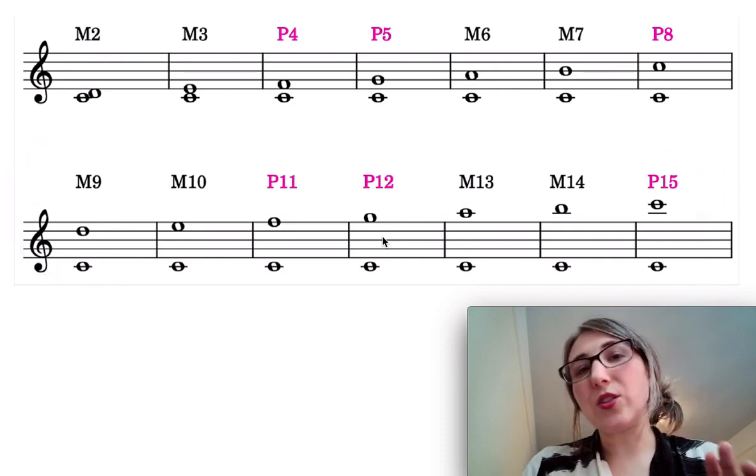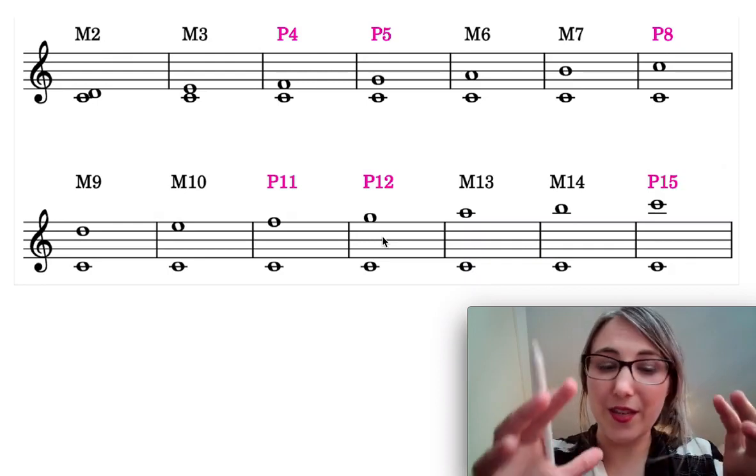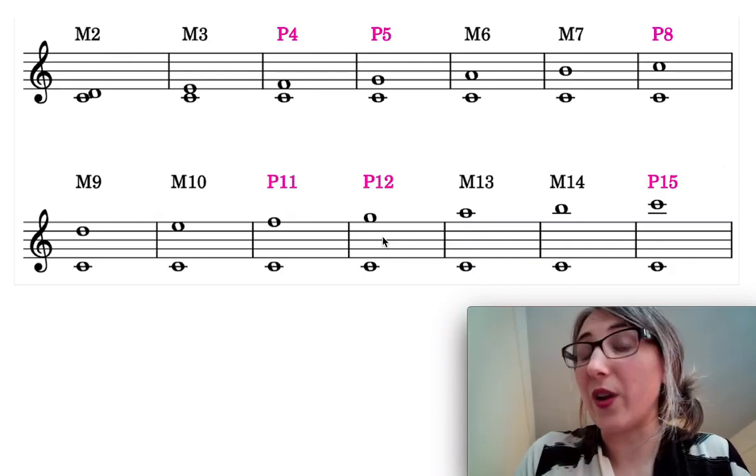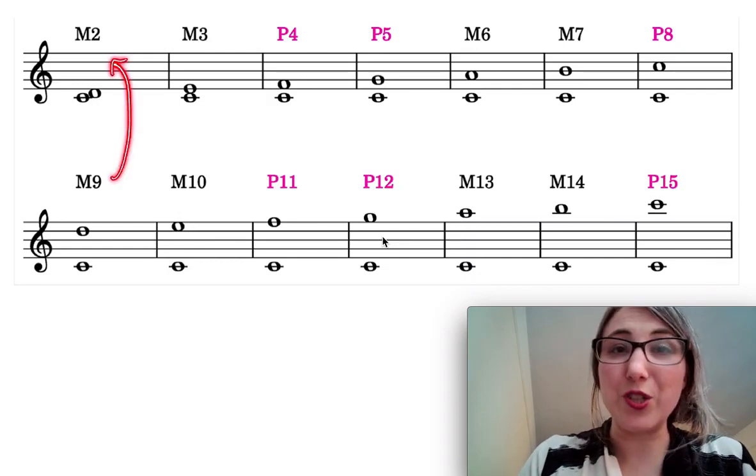And probably the easiest way to construct them and to identify them is to think about each of these intervals, is to reduce the octave out of the interval and think about them as their simple variance. So for each of the intervals below I've got their simple versions above.